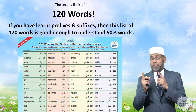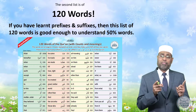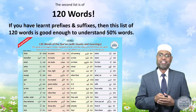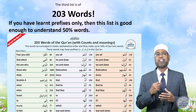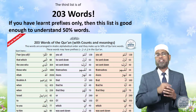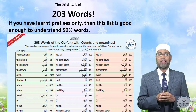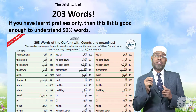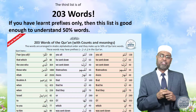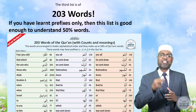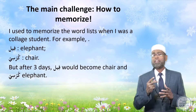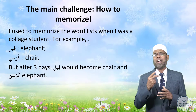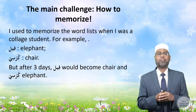The second list is of 120 words. If you have learned prefixes and suffixes, this list is good enough. The third list is of 203 words. If you have learned only prefixes, then this list is good enough. The main challenge is how to memorize the meanings.